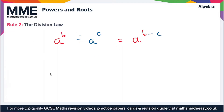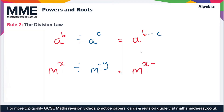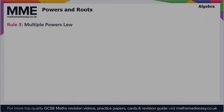This applies to all numbers whether positive or negative. For instance, we could have m to the power x divided by m to the power minus y. This is going to be equal to m to the power x minus minus y, which equals m to the power x plus y. There are a lot of different combinations here, but this is the division law.